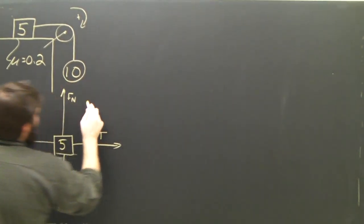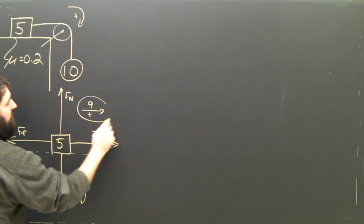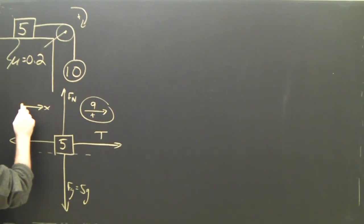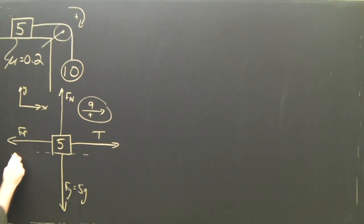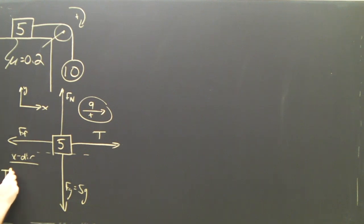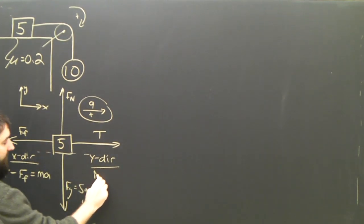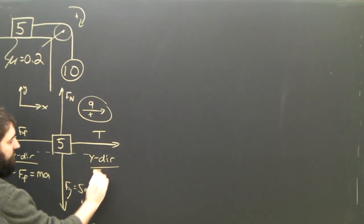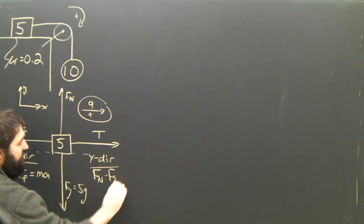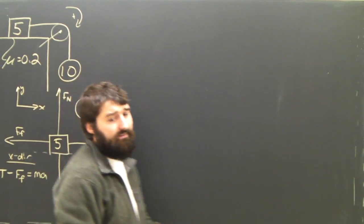Free body diagram is done. This thing is going to accelerate to the right, which means I'm going to call to the right x and I'm going to call up y. And in the x direction, Newton's law tells me that T minus FF equals ma. And in the y direction, Newton's second law tells me that Fn minus Fg equals 0. We're going to need that again later.